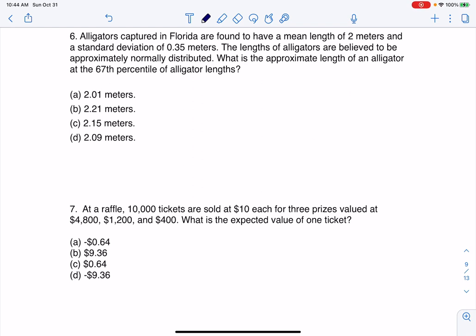All right, so for number six, alligators captured in Florida are found to have a mean length of two meters, a standard deviation of 0.35 meters. The lengths of alligators are believed to be approximately normally distributed. What is the approximate length of an alligator in the 67th percentile?